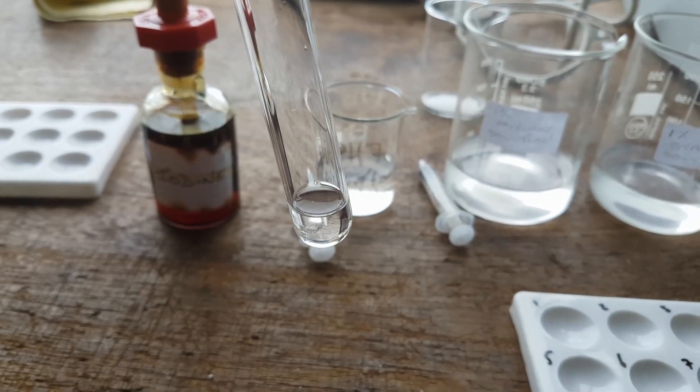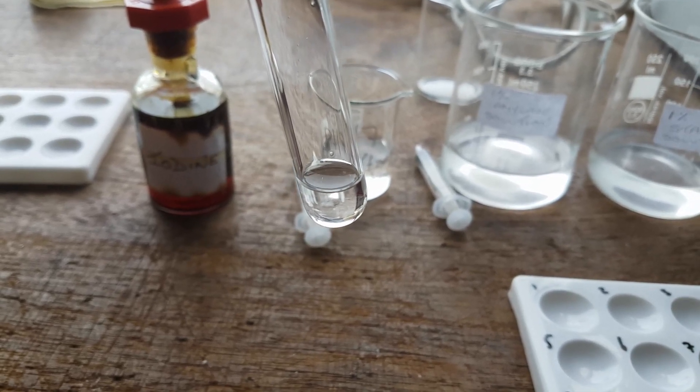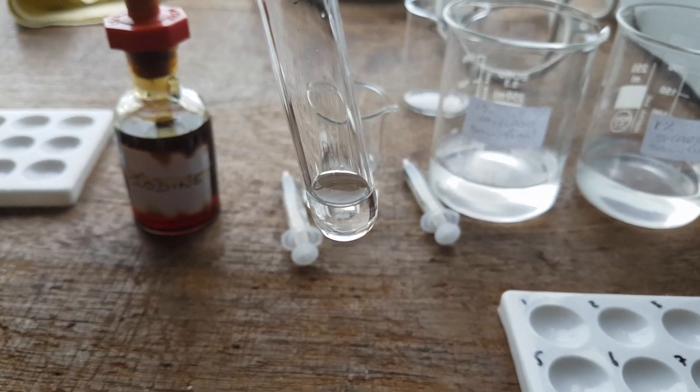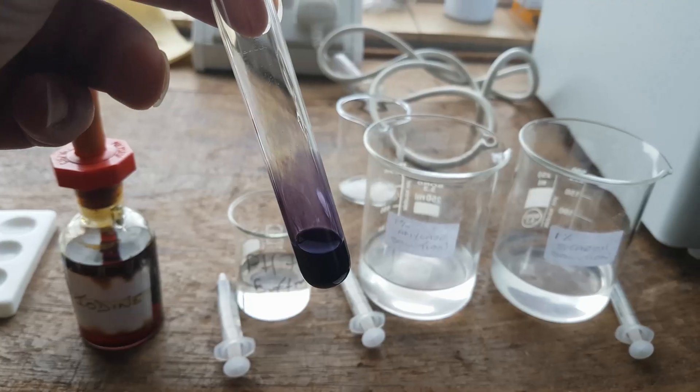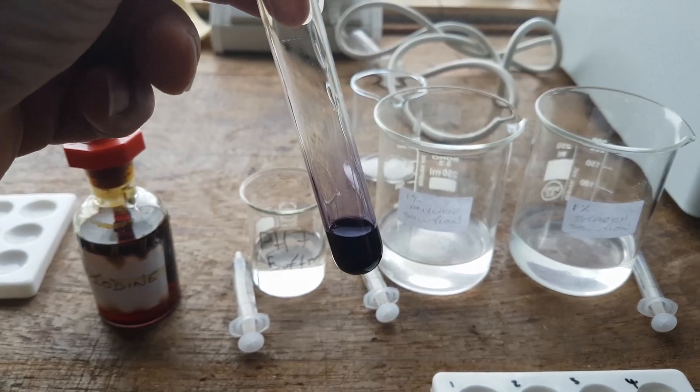This is another test tube but this time it has starch present because it's a starch solution. And I'm going to add the iodine into it and that should give us our positive result. As you can see, the starch has turned into a blue-black color. This is a positive test for starch.